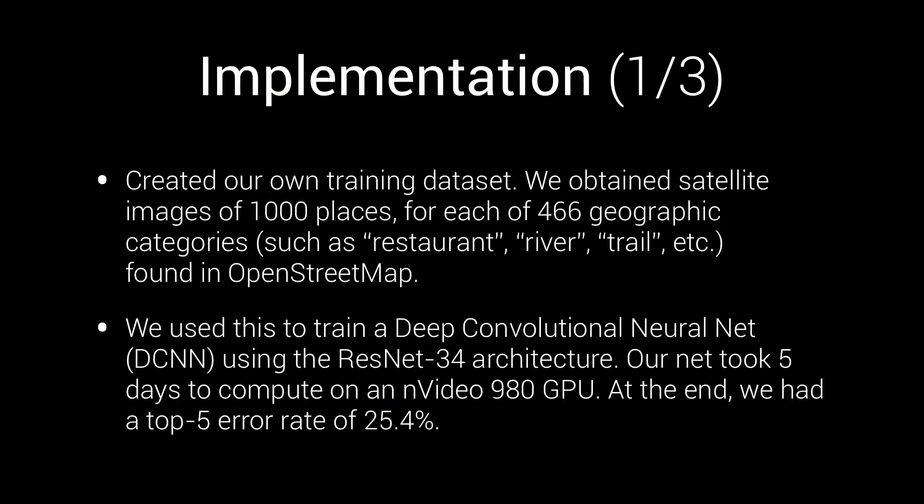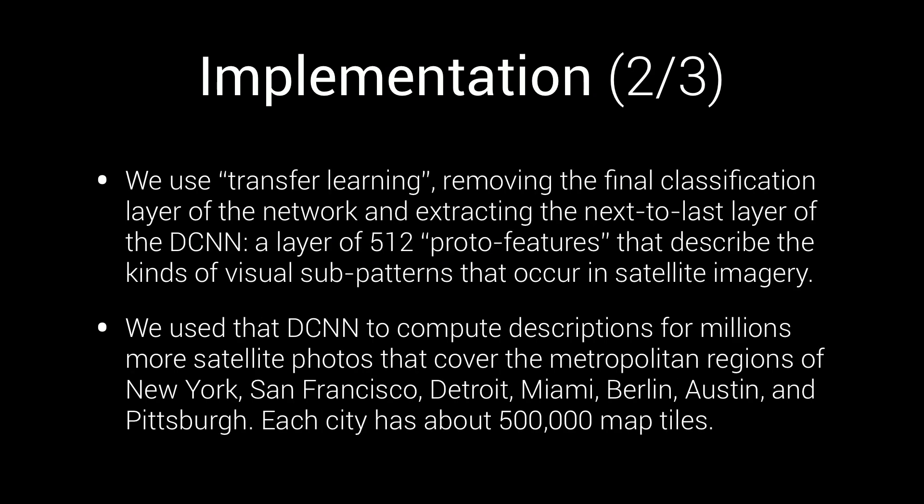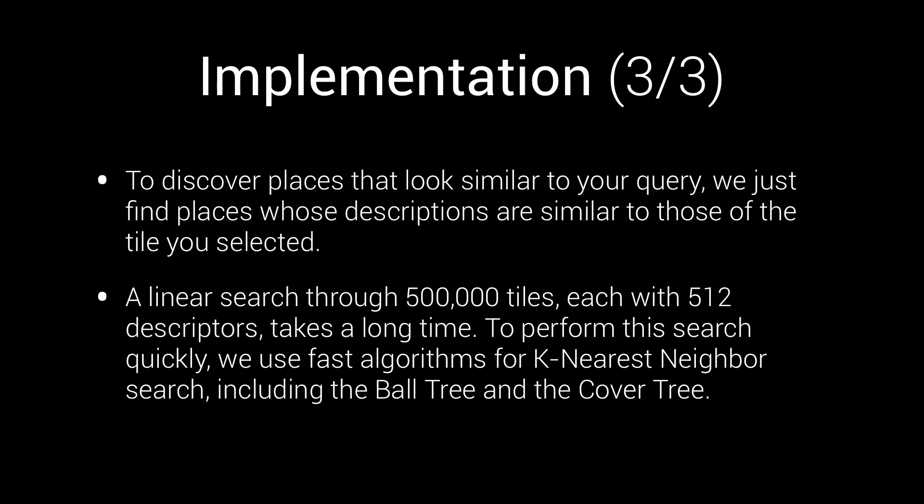Many machine learning breakthroughs are constrained not by the limitations of algorithms, but by the availability of high-quality training datasets. To create TerraPattern, we first had to make a dataset of satellite imagery, then trained a neural net with it. We used transfer learning — a technique that allows us to describe and match satellite tiles using high-level visual descriptors such as circles, right angles, and common textural patterns. To discover places that look similar to your query, we find places whose descriptions are similar to those of the tile you selected. We used fast techniques like cover trees to make this work in real-time.